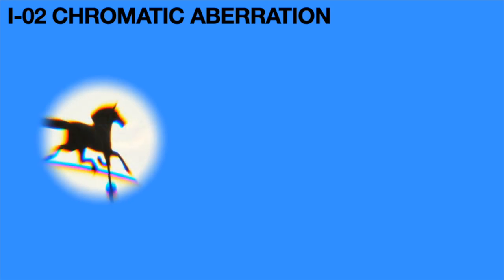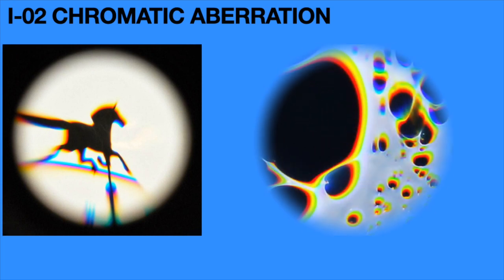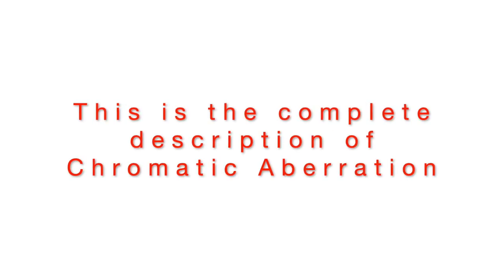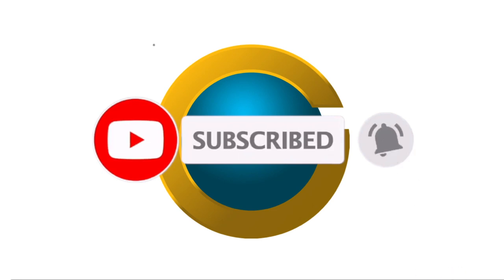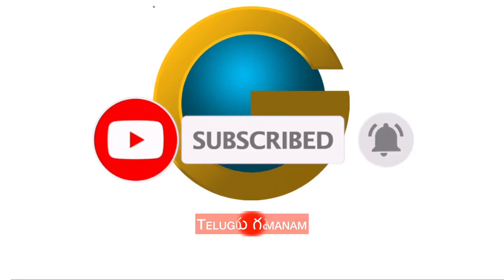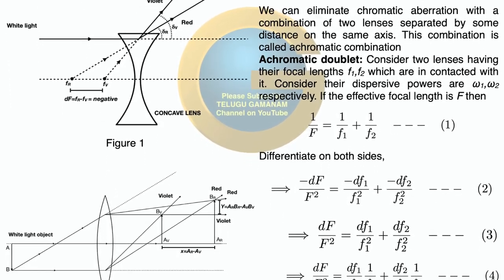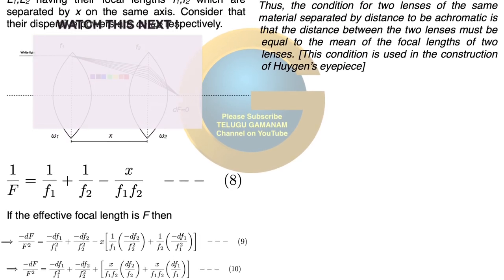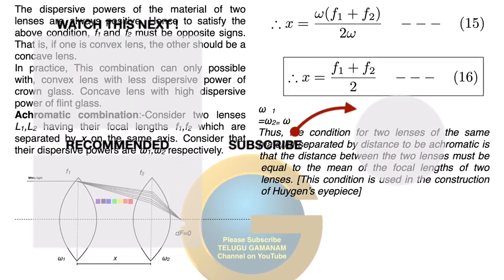We can see several pictures that contain chromatic aberration visible as colorful borders. For example, a picture of PZM with a colorful border indicates chromatic aberration, whereas the original picture has no chromatic aberration at all. Please subscribe to our Telugu Gamanum channel for more lecture videos, click the bell icon for notifications, and click the description link below for lecture notes. Thank you for watching, see you in the next lecture video.